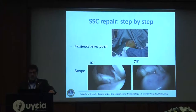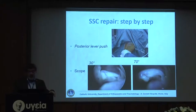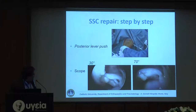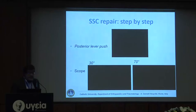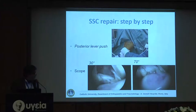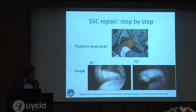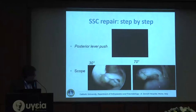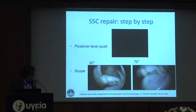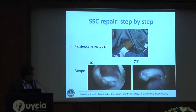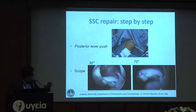The second key point is to identify the lesser tuberosity footprint. The posterior lever push maneuver is very important and very useful to identify the footprint of the subscapularis, even if you use only a 30-degree scope. There is not much difference when you use this position and perform this maneuver — internal rotation, slight abduction, and push the humeral head posteriorly — whether using a 30-degree or 70-degree scope.